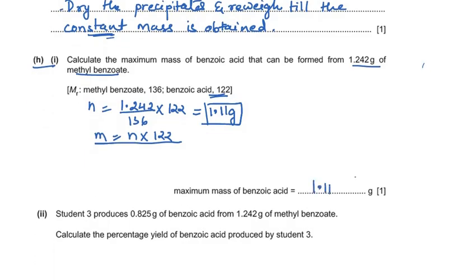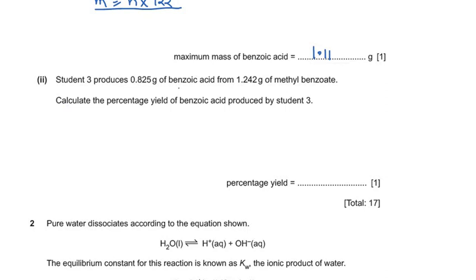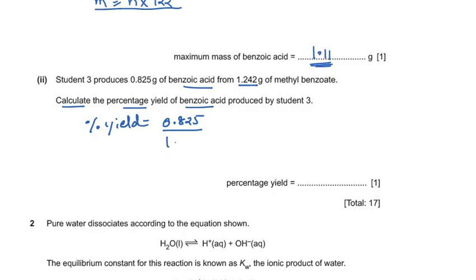Student 3 obtained 0.825 g of benzoic acid from 1.242 g of methyl benzoate. The percentage yield = (actual mass ÷ theoretical mass) × 100 = (0.825 ÷ 1.11) × 100 = 74.0%. This concludes question 1; question 2 will be discussed in the next video.